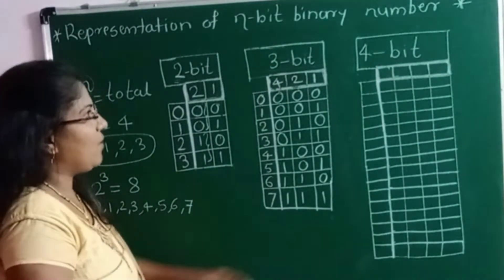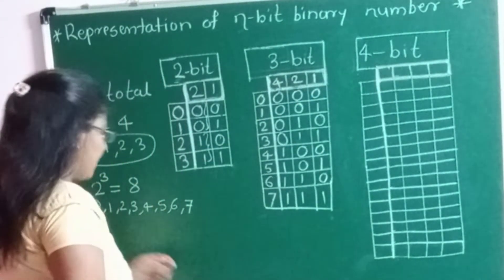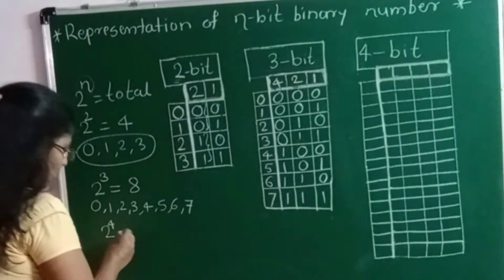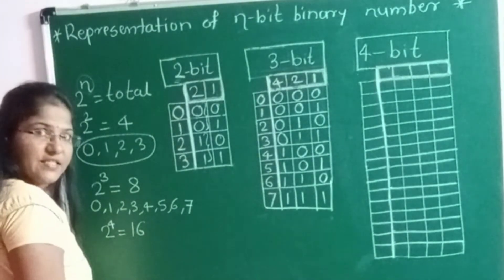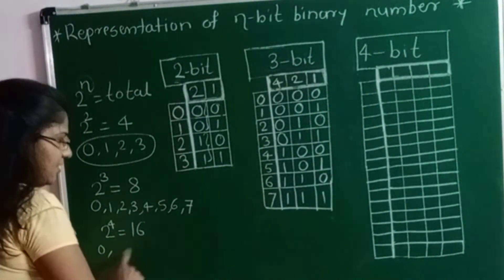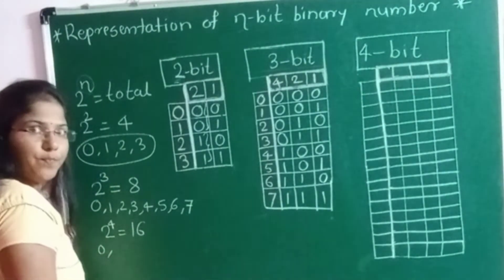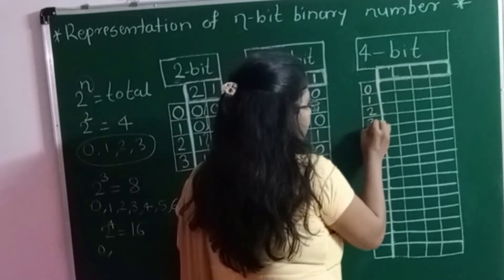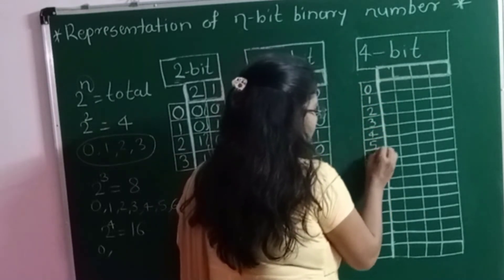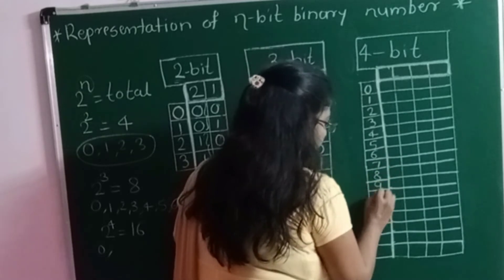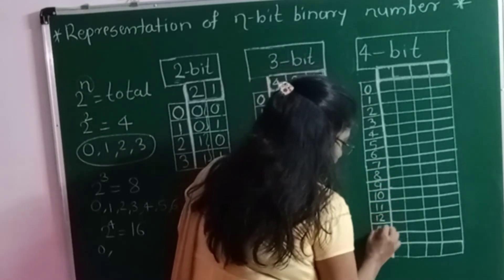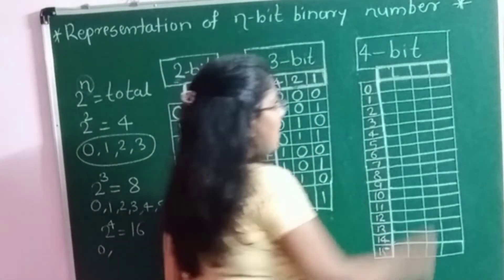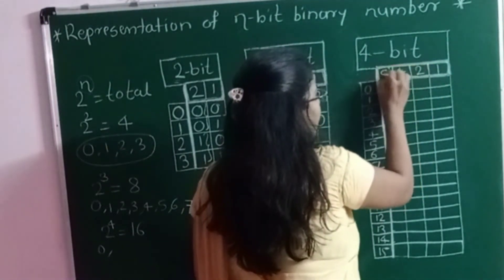The last table is 4-bit binary number representation. 2 raised to 4 equals 16, so we can represent 16 values from 0 to 15. The 4 weighted values are 1, 2, 4, and 8.